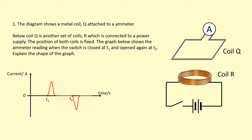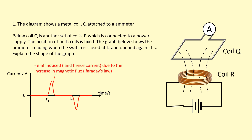In this example, the diagram shows a coil Q connected to an ammeter. Below Q is another coil R, which is connected to a power supply. The positions of both coils are fixed. The graph shows the ammeter reading when the switch is closed at t1 and opened again at t2. At t1, when we close the switch, a current flows in coil R, producing a magnetic field that goes through coil Q, creating a change in flux. Because of this change in flux, an EMF is induced in coil Q — that's Faraday's Law.